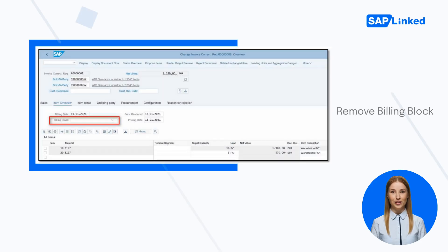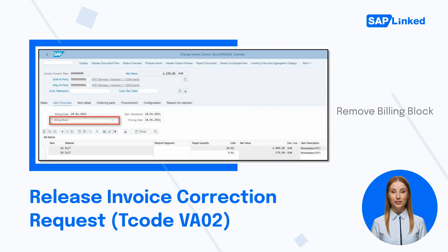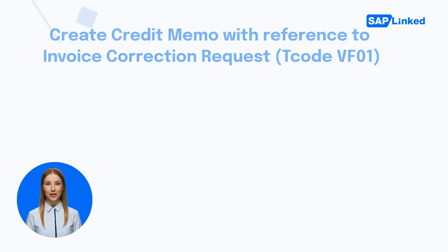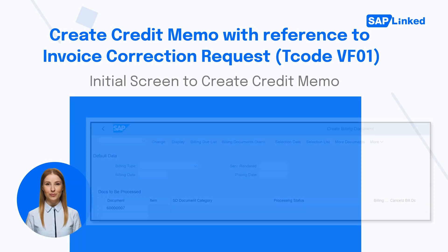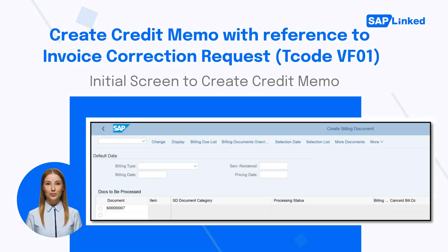Release the invoice correction request using T-code VA02. To release the document, click the Item Overview tab and update the billing block field to blank. Then create the credit memo with reference to the invoice correction request.